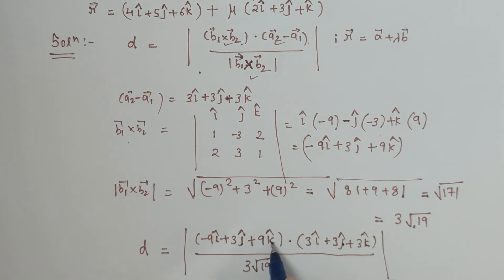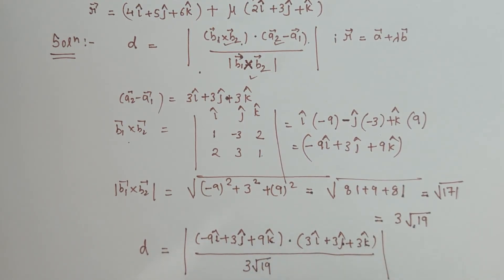Then likewise only j and j exist, k and k exist. Dot of j with i or k is 0, dot of k with i or j is 0, so only like dots will exist. So it is 3 into 3 is 9, and 3 into 3 is 9. So minus 27 plus 9 plus 9.